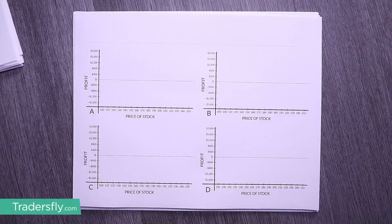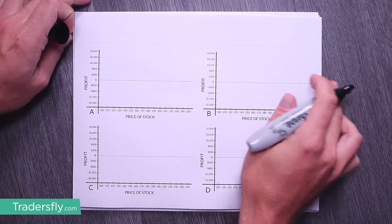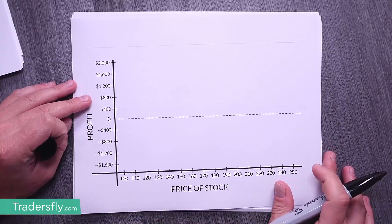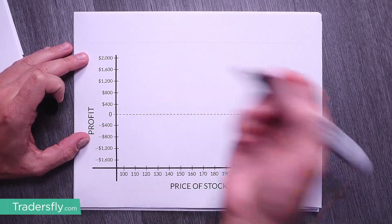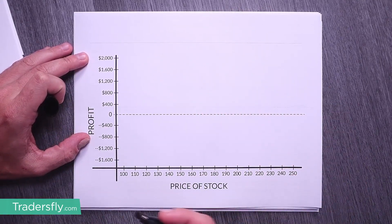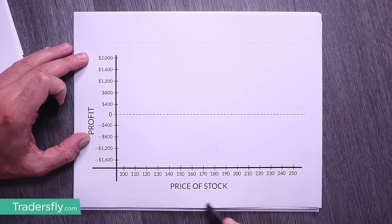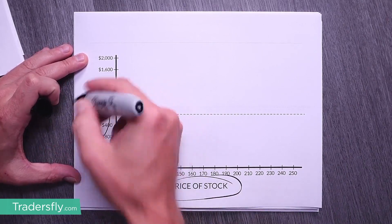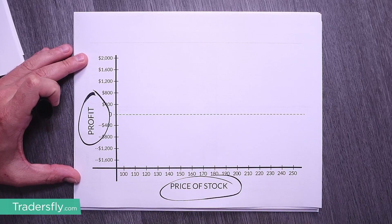It's important you first understand what is happening in the Analyze Tab. To do that, we're going to go on paper — just basics. When you think about this, you've got to look at it from a basic kindergarten point of view. What is happening here? Well, this tells you how much you're making or losing in terms of money. At the bottom, we have the price of the stock, and on the left or right is your profit.